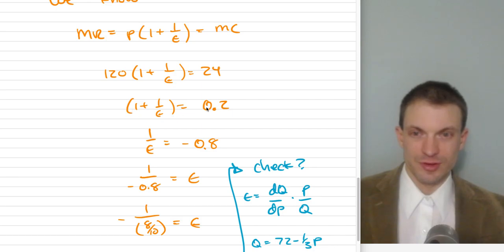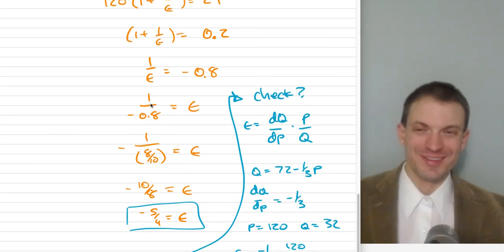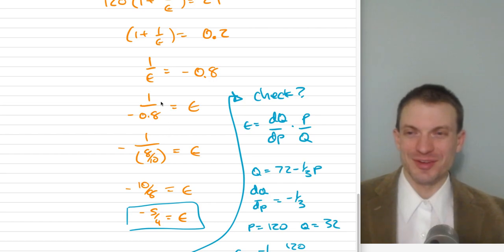Alright, so this is equal to 0.2, or this is equal to minus 0.8, or just solving, look at this, 1 over minus 0.8. That's horrible. Let's write this as a fraction. We don't like having fractions with decimals in them, do we? Anyway, we're going to have 10 over 8, or we're going to have minus 5 fourths equals epsilon.